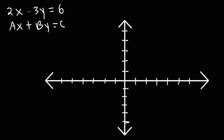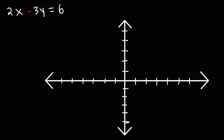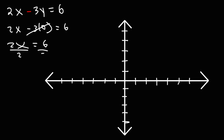One of the best ways to graph an equation in standard form is to find the x and y-intercepts. To find the x-intercept, replace y with 0 and solve for x. Negative 3 times 0 is 0, so that disappears, giving us 2x equals 6. Dividing both sides by 2, we get x equals 3. So we have the point 3, 0.